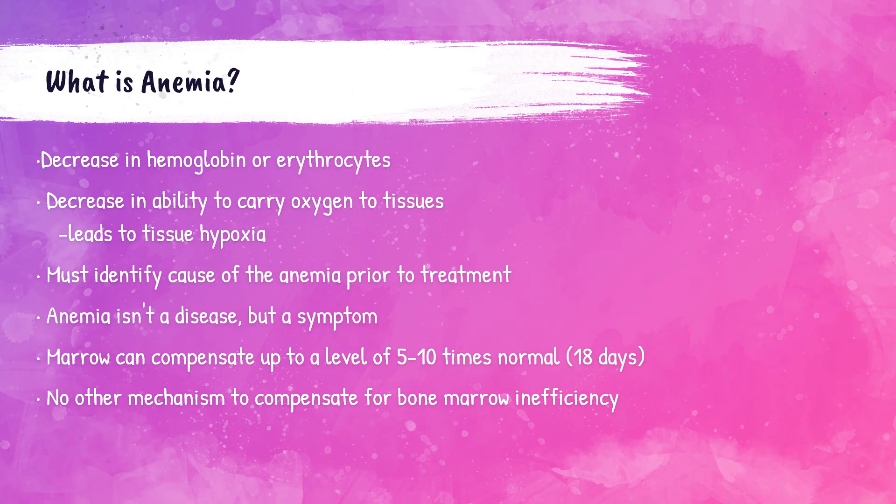Anemia is defined as the body not having enough healthy red blood cells or enough hemoglobin to carry oxygen to its tissues. Patients with anemia can have a variety of symptoms including weakness, shortness of breath, and fatigue. Anemia itself is not a disease but is a symptom. It can be a symptom of something mild or something severe. There are many different forms of anemia, all of which have their own causes.